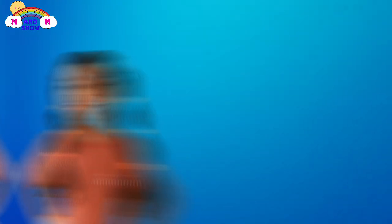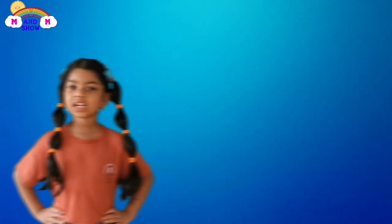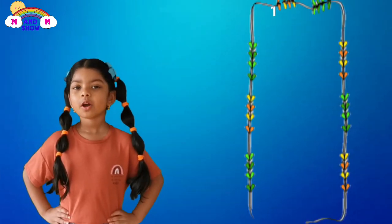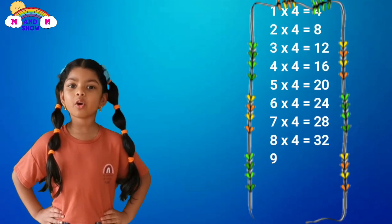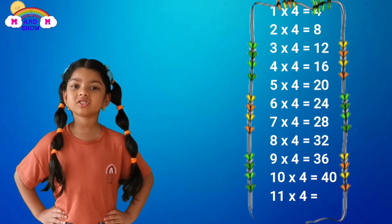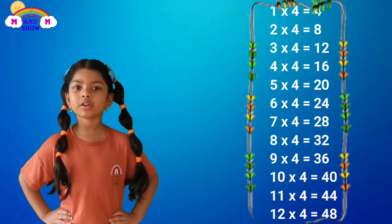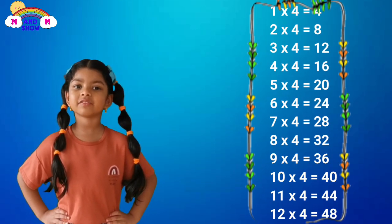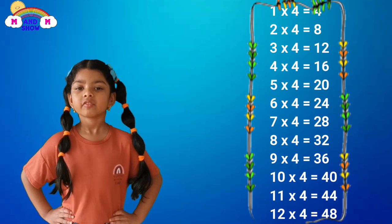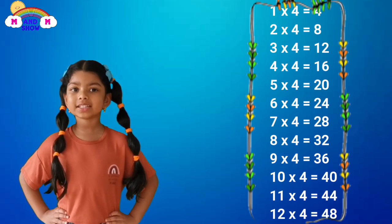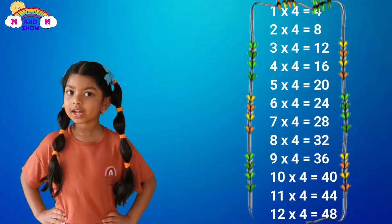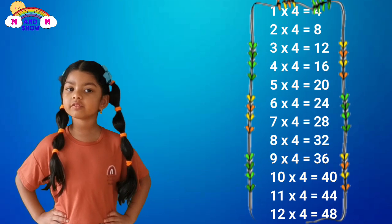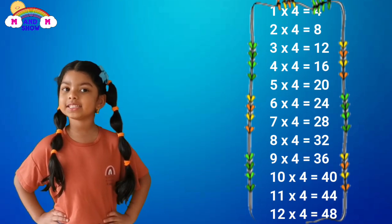Okay guys, now it's time for the four timetables. One time four is four, two time four is eight, three time four is twelve, four time four is sixteen, five time four is twenty, six time four is twenty-four, seven time four is twenty-eight.